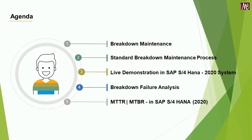Focusing on today's agenda, here 5 different points are highlighted. In points 1 and 2 we will cover the theory part of Breakdown Maintenance and Standard Breakdown Maintenance Processes, along with Agile Relevant Interview Questions. In point 3 we will execute the same process in SAP S4HANA 2020 system. In point 4 we will learn the calculation part of Failure Analysis, and in point 5 we will extract the failure analysis report through MTTR and MTBR in SAP S4HANA 2020 system.